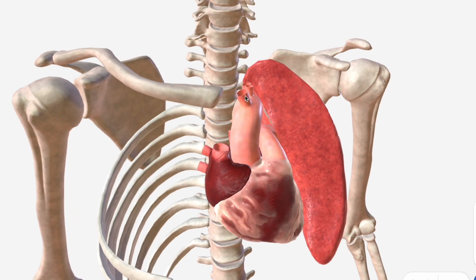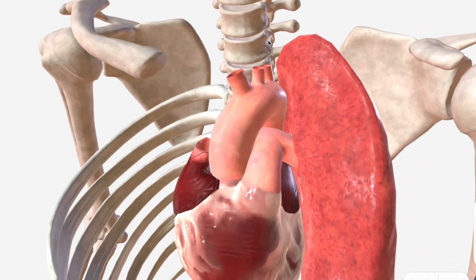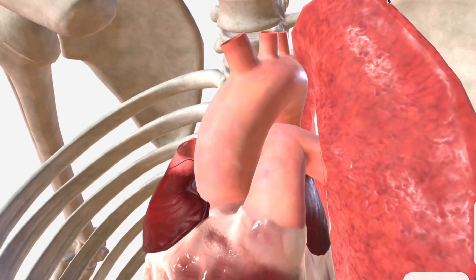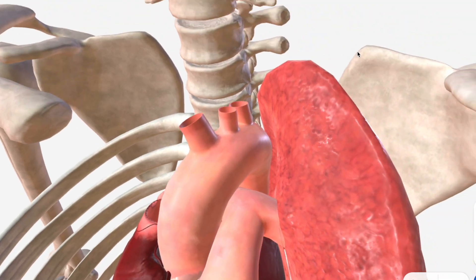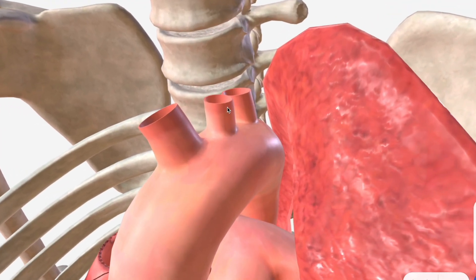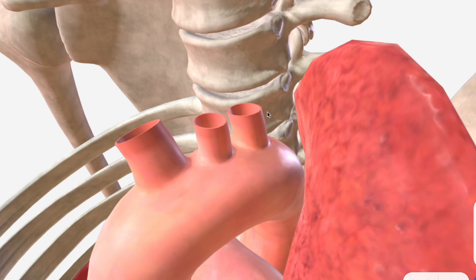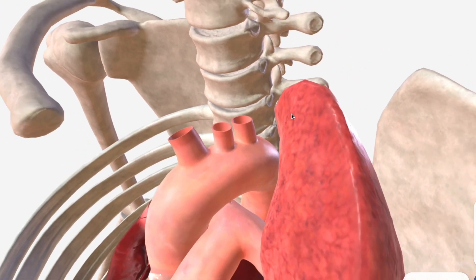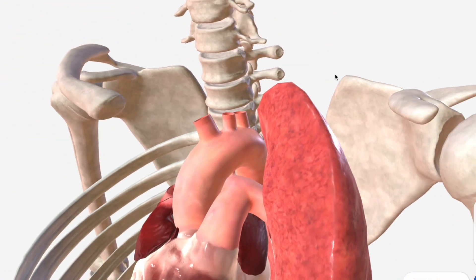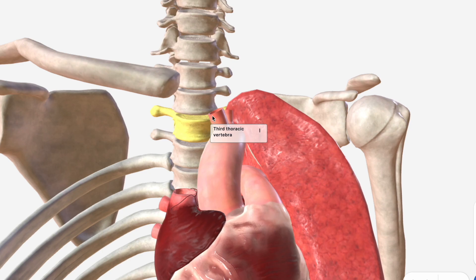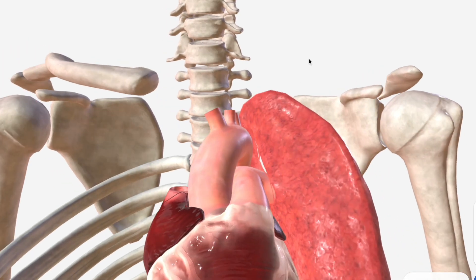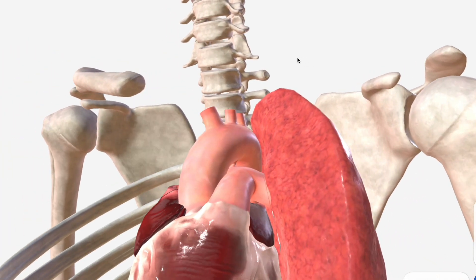We have, first, the brachiocephalic trunk. Shortly after that, we have the left common carotid. And then, immediately after that, we have the left subclavian. These all depart at around the level of the third thoracic vertebra.